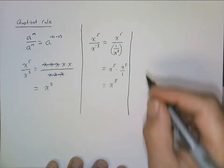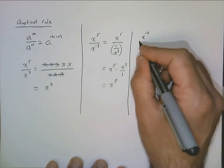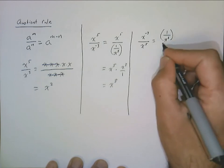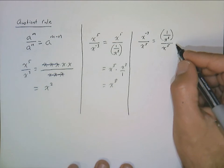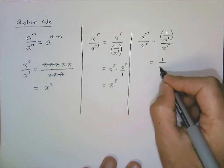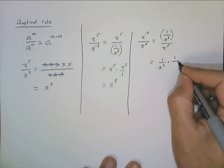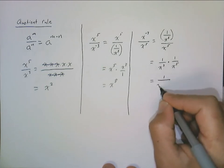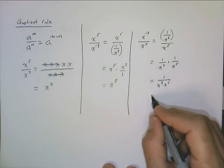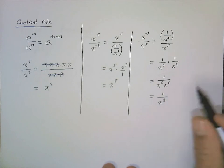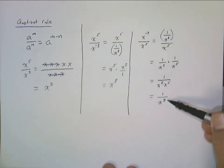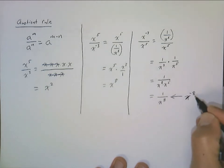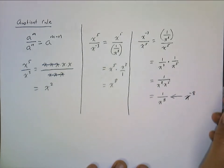It works even if the negative exponent is in the numerator. If we have x to the negative 3 over x to the fifth, that's 1 over x cubed divided by x to the fifth, which equals 1 over x cubed times 1 over x to the fifth. Applying the product rule in the denominator gives 1 over x to the eighth. And negative three minus five is negative eight, but we write it as 1 over x to the eighth rather than x to the negative eight, since simplified form requires positive exponents.